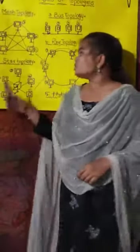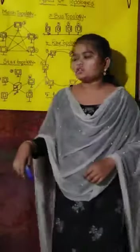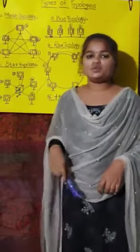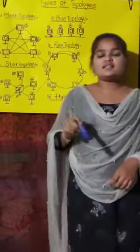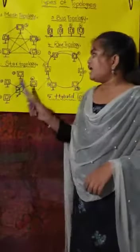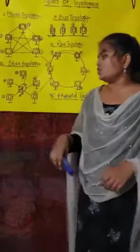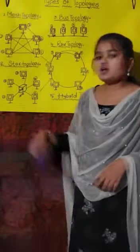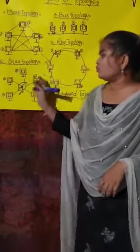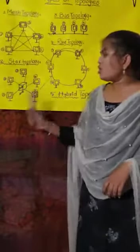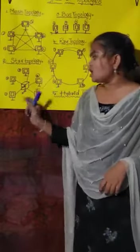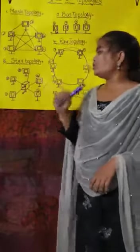Next is the star topology. In star topology, every system connects to one central device. The central device we call a hub. Like this — this is the star topology. In this star topology, if we transfer data from the first system to the fourth system, the first system transfers data to the hub, and the hub transfers the data to the fourth system.